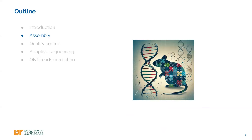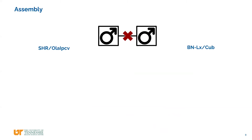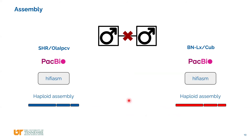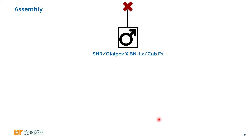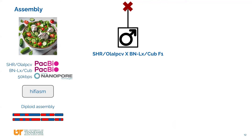With this data we did assemblies for the two inbred strains using Hi-Fi ASM to get haploid assemblies. For the F1 sample we tried three different strategies. The first I called the 'rat salad' strategy — mixing all samples together — to get a reference to compare with, combining Hi-Fi reads with ultra-long reads, which is now the good practice for high-quality assemblies.